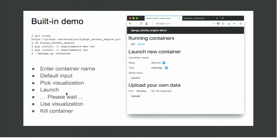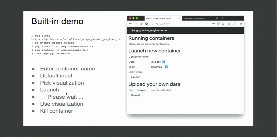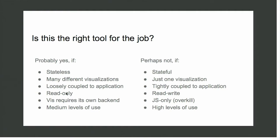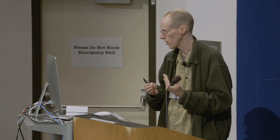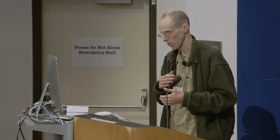Then your application — depending on how you're doing this, it might be something you manage explicitly or via some timeout system — you have the option to kill the container, and then it's not there anymore. This solves some problems, but not every problem. If your visualization is stateless, if you want to match many different libraries or different visualizations, if each visualization is loosely coupled to the application, if it's read-only, and if the visualization requires its own backend, it's a good solution. Conversely, if it's going to be heavier weight or JS-only, it's overkill. If you have more questions, you can see me at the poster session. Thank you.